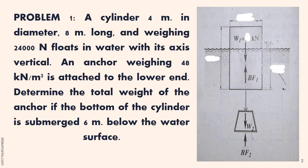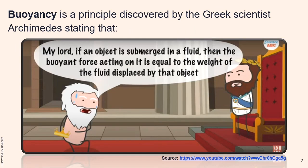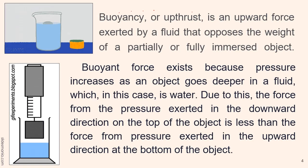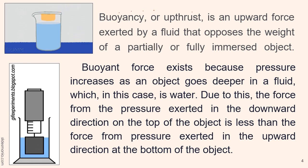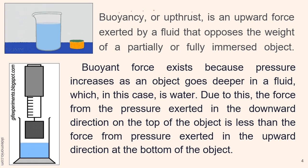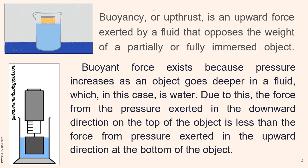Before we start solving the problem, let us first take a look at the picture shown on screen. Buoyancy is a principle discovered by the Greek scientist Archimedes, stating that if an object is submerged in a fluid, the buoyant force acting on it is equal to the weight of the fluid displaced by that object. Buoyancy, or upthrust, is an upward force exerted by a fluid that opposes the weight of a partially or fully immersed object. Buoyant force exists because pressure increases as an object goes deeper in a fluid.